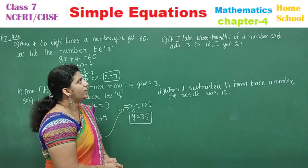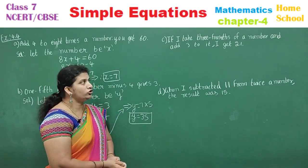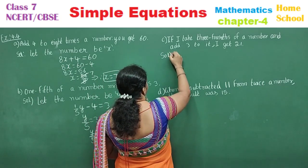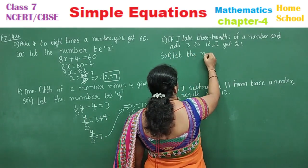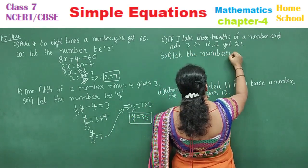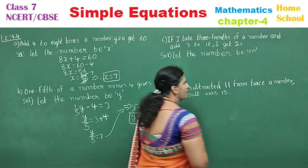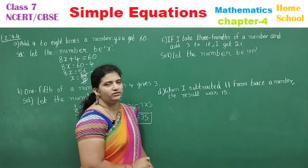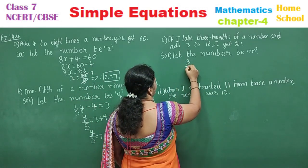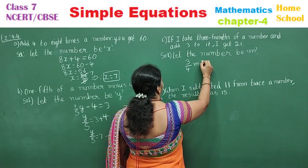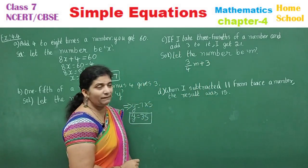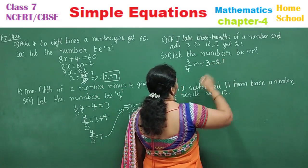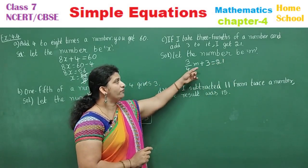Next sub-question C: 'If I take three-fourths of a number and add 3, I get 21.' First step — let the number be M. Three-fourths of a number is (3/4)M, and add 3 means plus 3, equals 21.